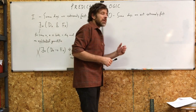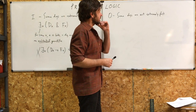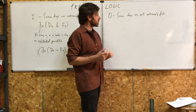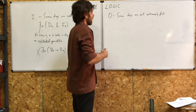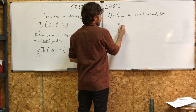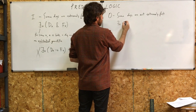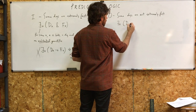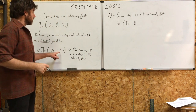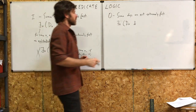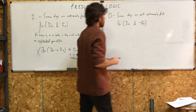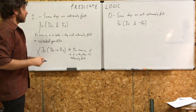Now let's symbolize an O statement: 'Some dogs are not extremely fast.' Use the existential quantifier — for some X, X is a dog and it's not extremely fast. So: for some X, D-X and not F-X.